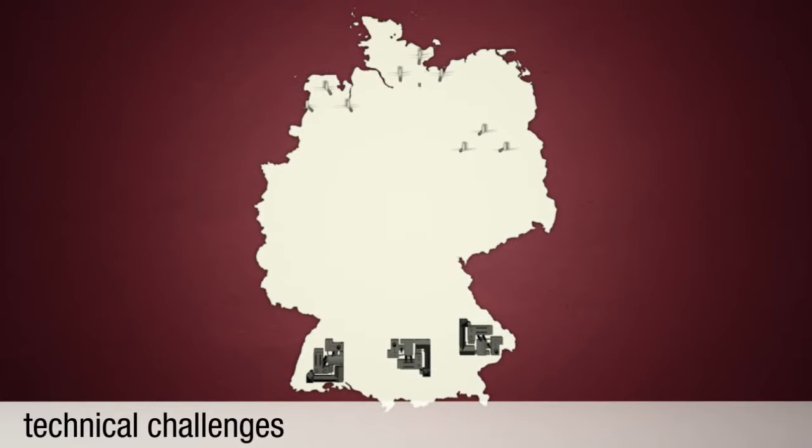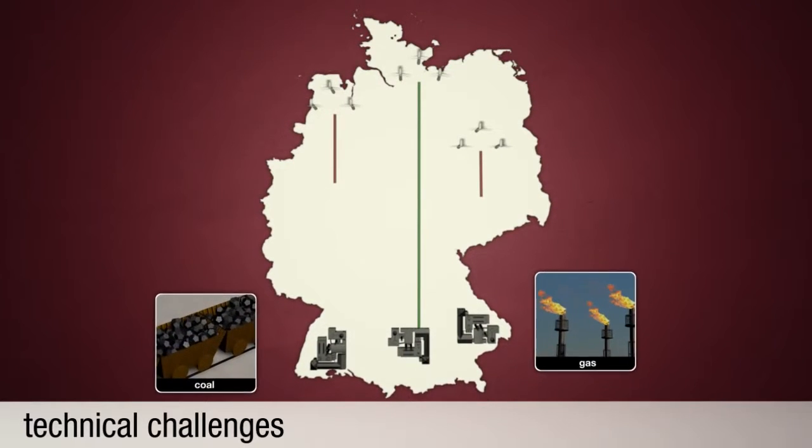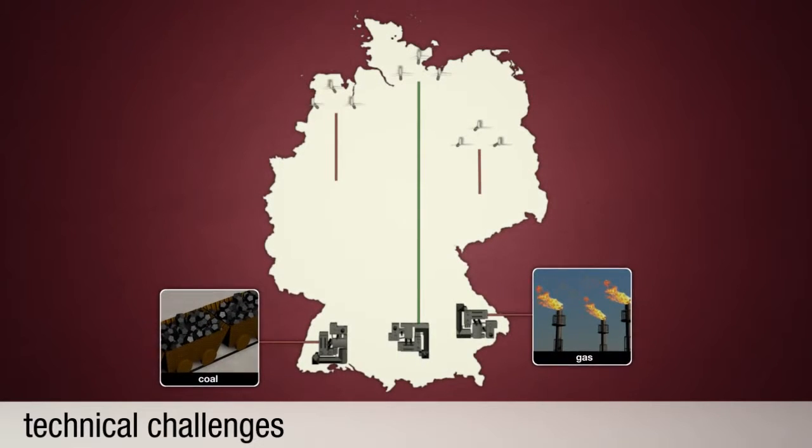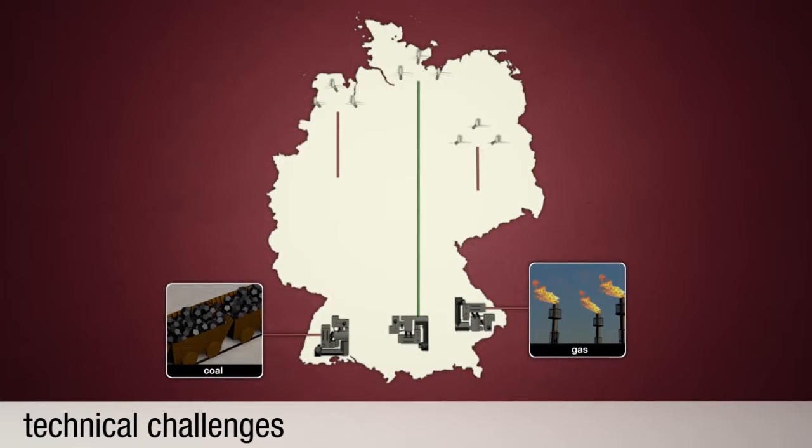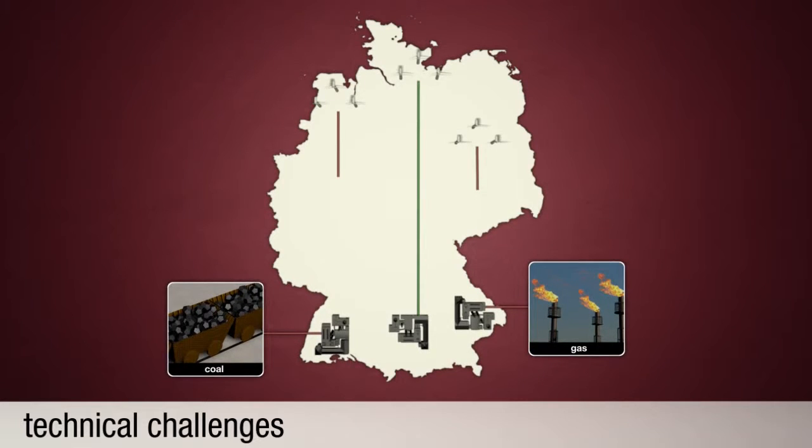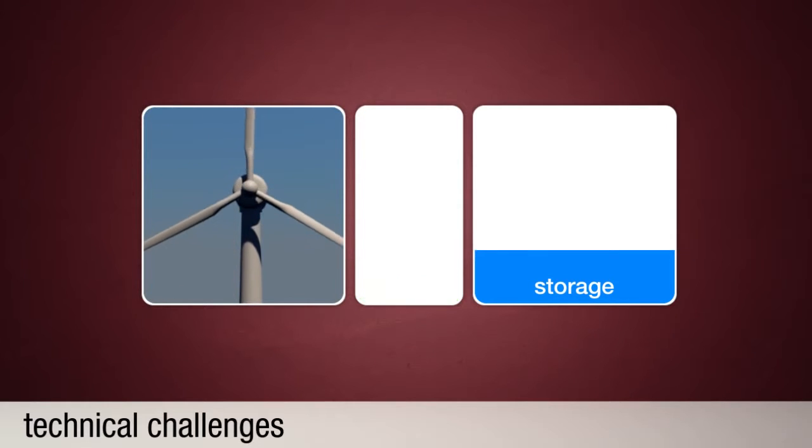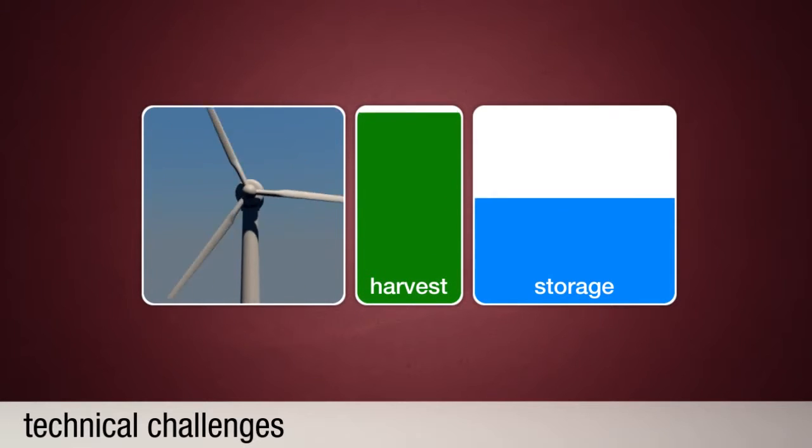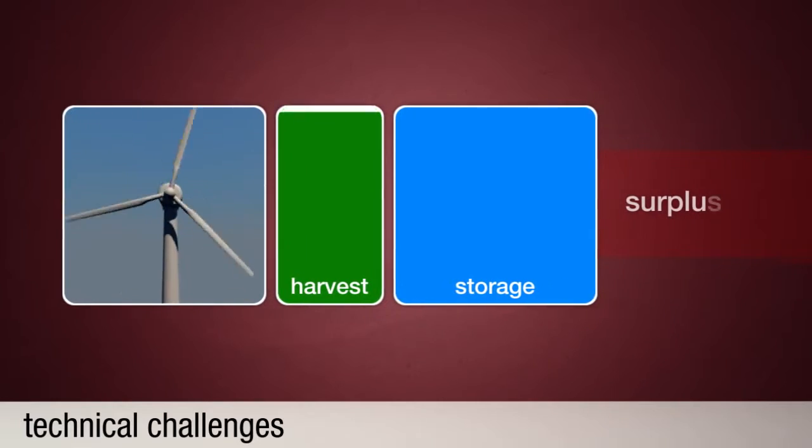Currently, the power grid lacks the capability to transport enough energy from north to south. As a result, energy often has to be bought from other sources, even though enough energy is actually produced. In addition, renewable energy sources are heavily dependent on the weather. Their output fluctuates. In times when power plants achieve a high performance, for example when there is a strong wind, there is a lack of sufficient storage capacity for the energy surplus.